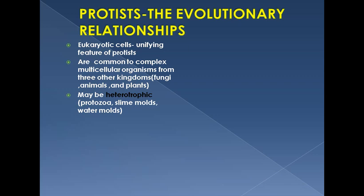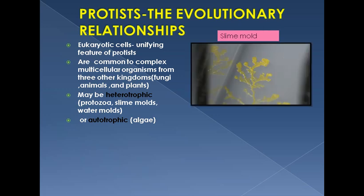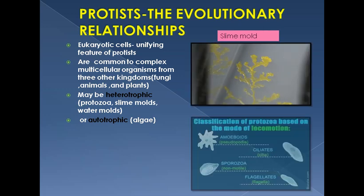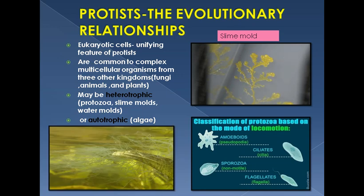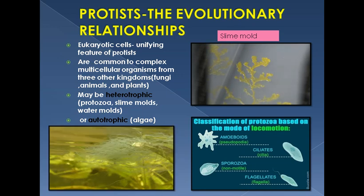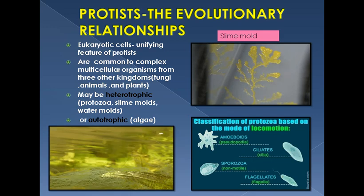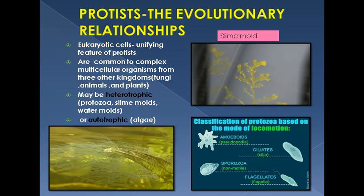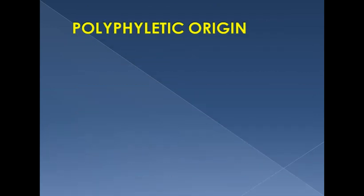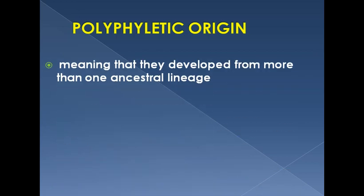Heterotrophic protists include protozoa, slime molds, and water molds, while autotrophic protists include algae, which are photosynthetic. These are a few pictures of the protists — this is slime mold, and these are animal-like protists which include amoeboids, ciliates, sporozoa, and flagellates. We will discuss them later on.